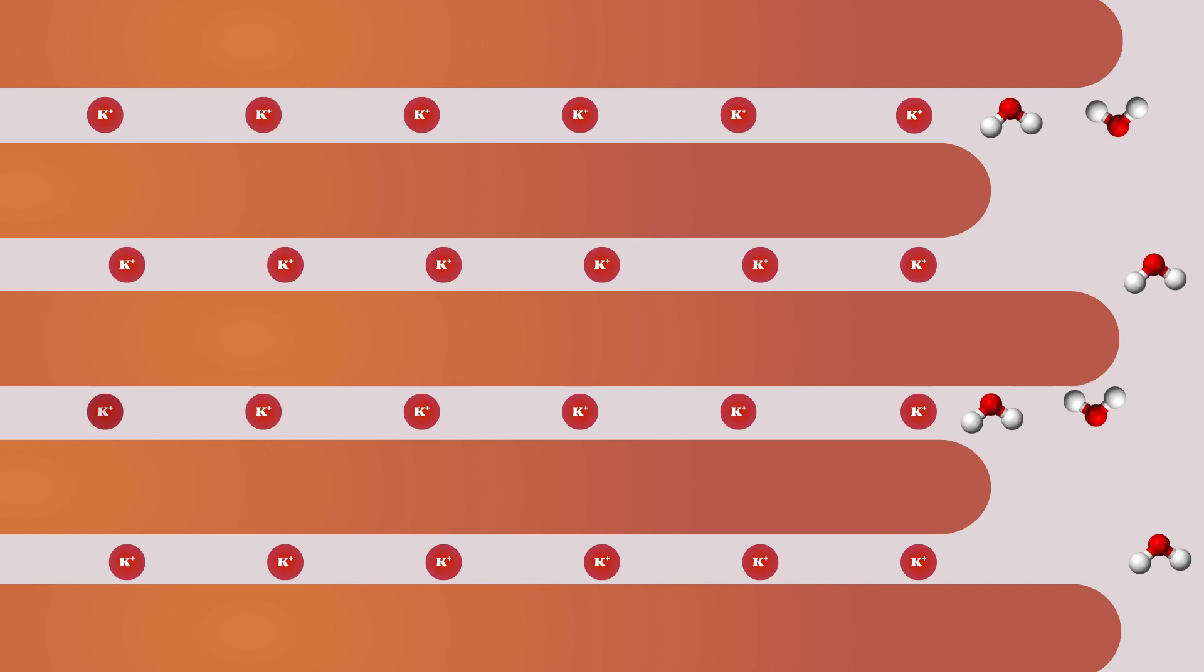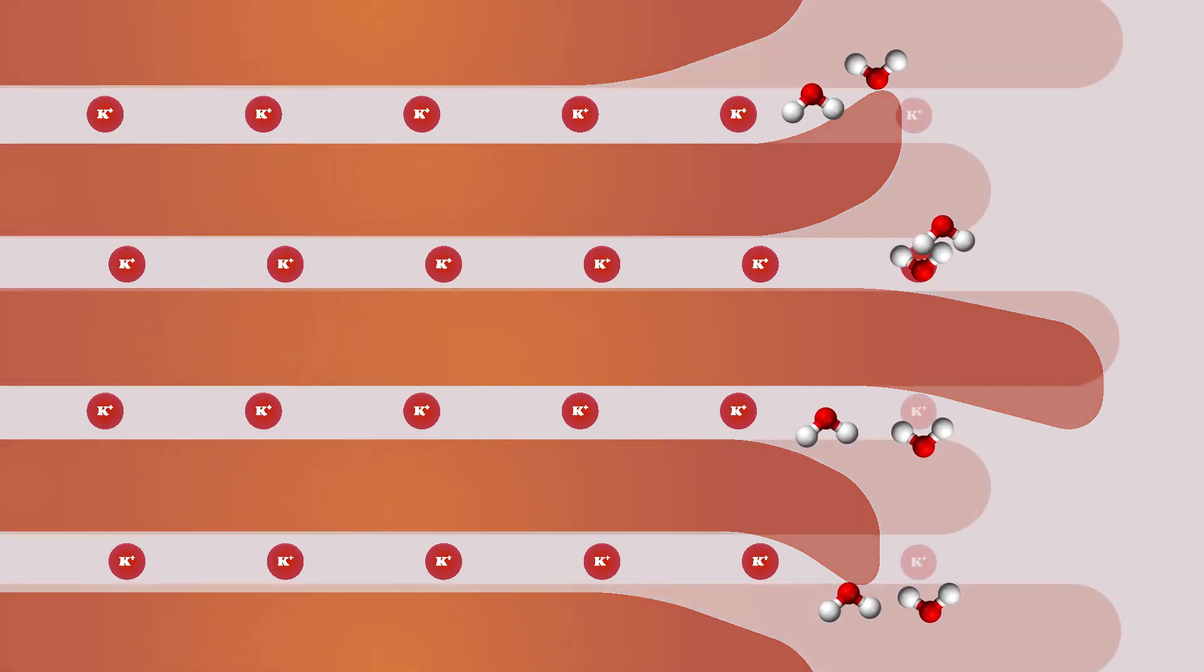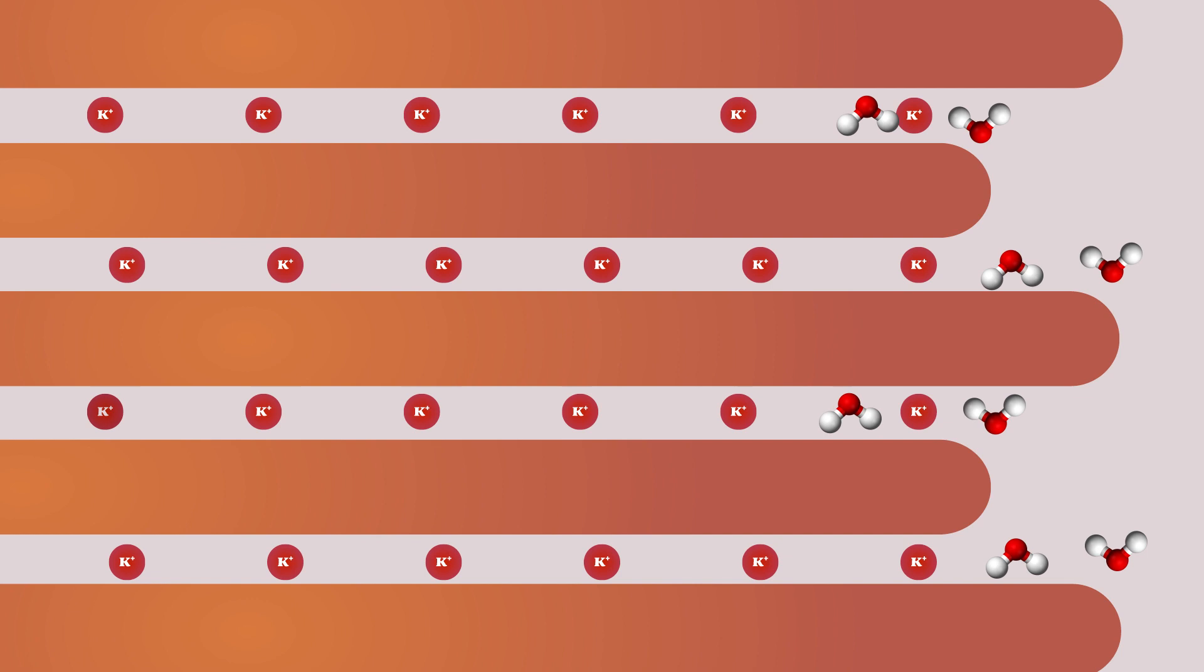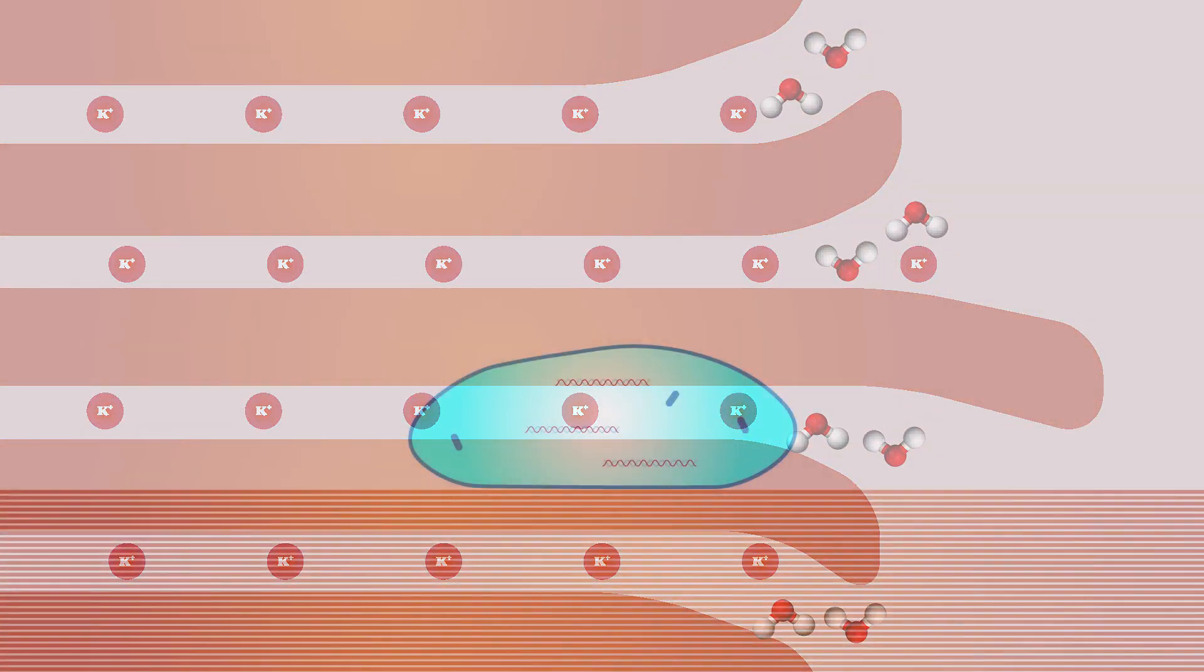but over repeated cycles of wetting and drying, water can seep between the edges of the sheets, providing a protective and wet environment perfect for life. As the mica sheets move, opening and shutting in response to water flow, a source of mechanical energy is provided.